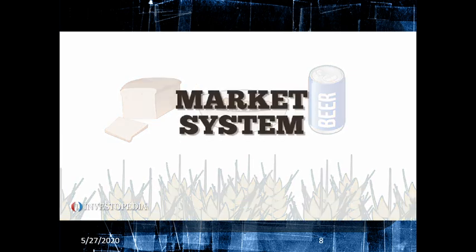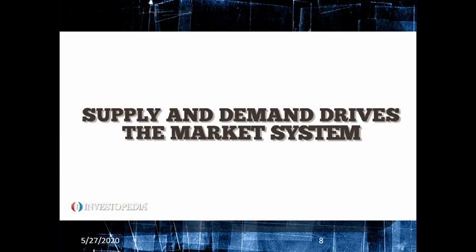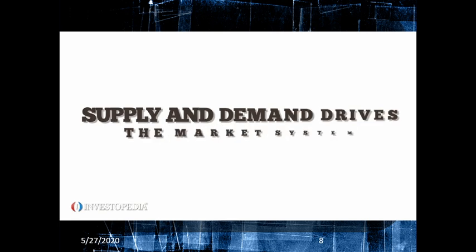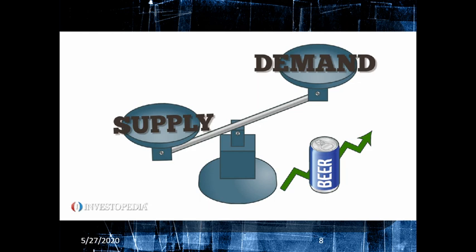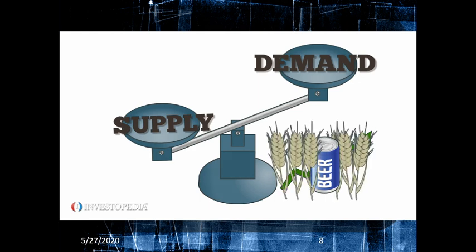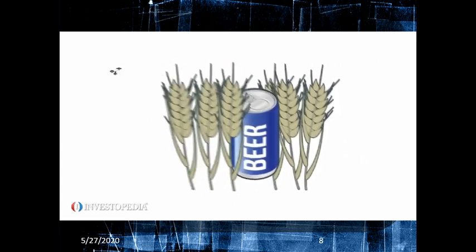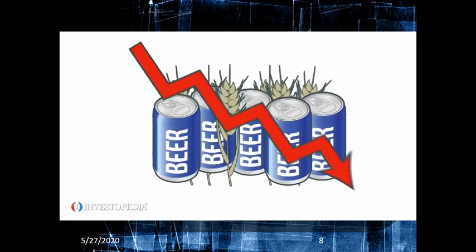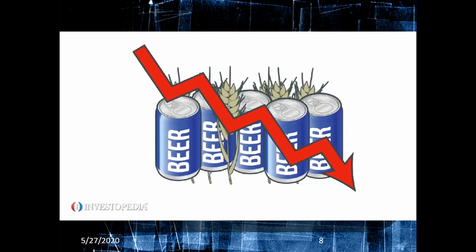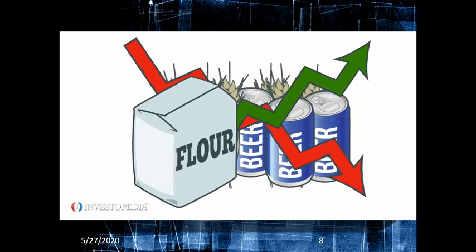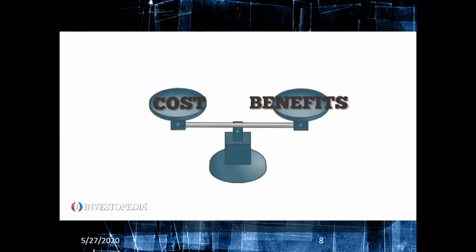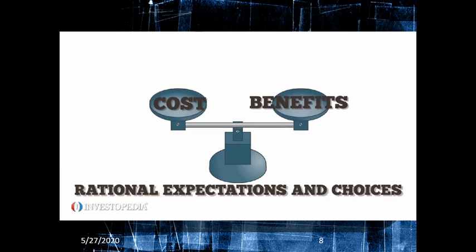One answer is a market system. Supply and demand drive the market system. Say the demand for beer is high — beer brewers can raise their prices, so there's more money to be made by converting wheat into beer than grinding it into flour. More people make beer until there's too much of it and prices sink. Meanwhile, the price of flour rises as the supply of wheat dwindles, so more producers buy wheat to make flour. The concept of costs and benefits applies to areas of rational expectations and choices.